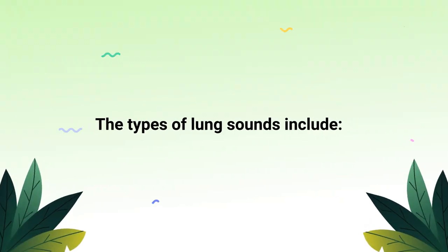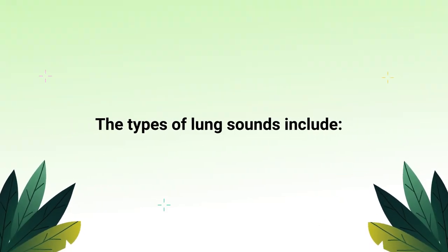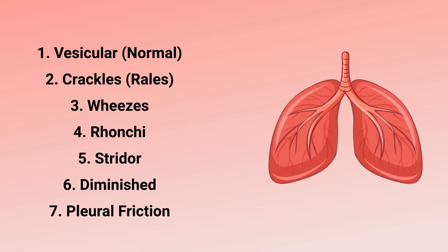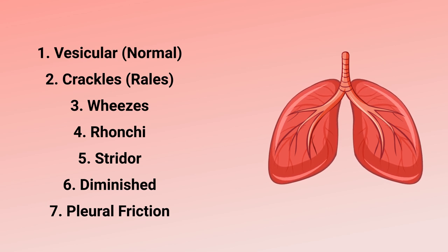The types of lung sounds include vesicular, which is normal; crackles, also known as rales; wheezes; rhonchi; stridor; diminished; and a pleural friction rub.